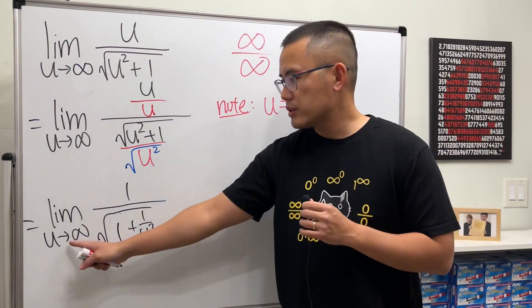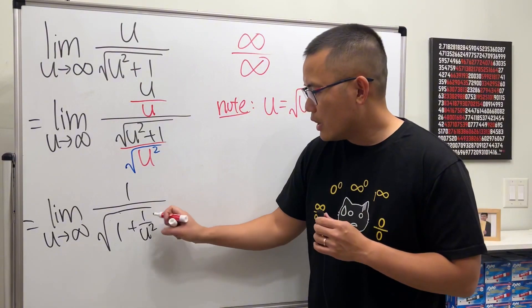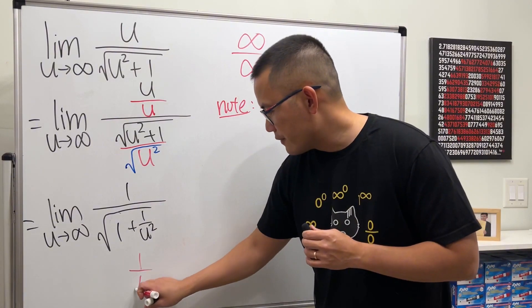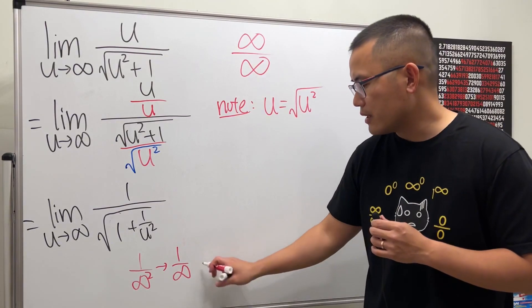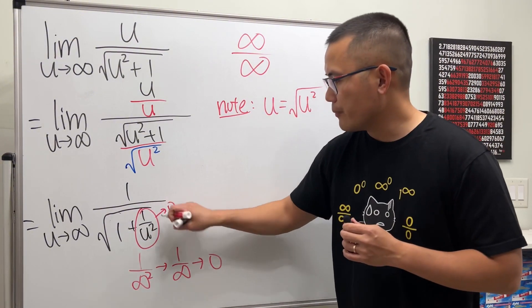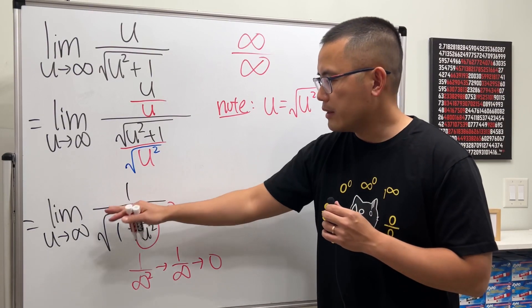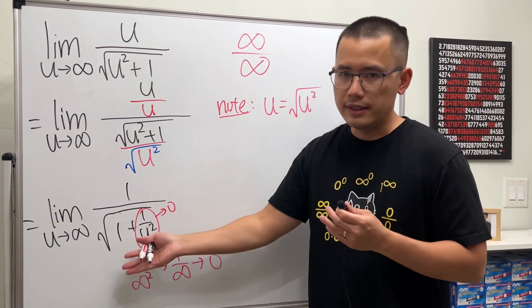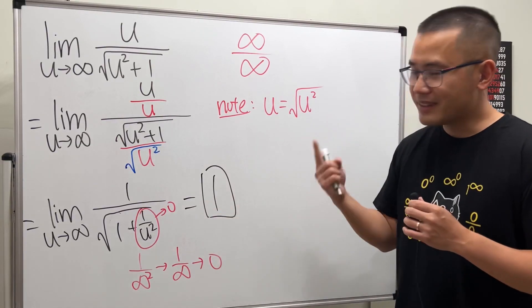And now, let's just go ahead and plug in infinity into this u here. And notice that 1 over infinity squared is just the same as 1 over infinity. That will give us 0. So, this will approach 0. So, as u going to infinity, we just have 1 over square root of 1. And square root of 1 is 1. So, all in all, we just have the answer equal to 1. And that's it.